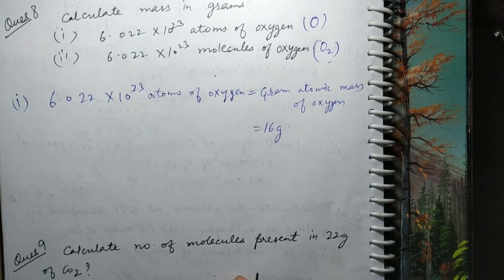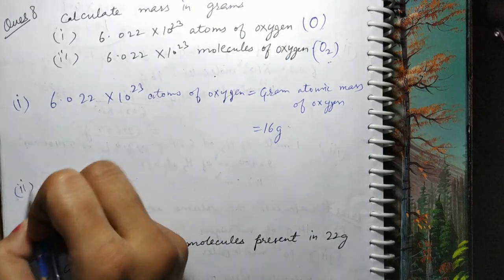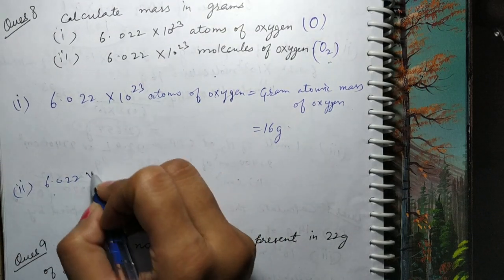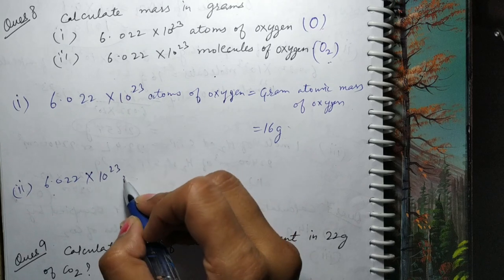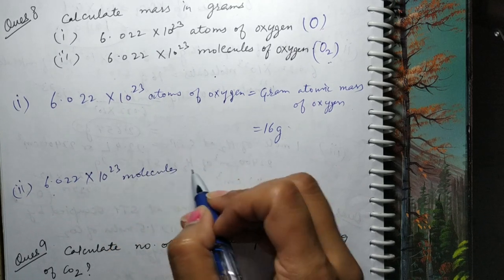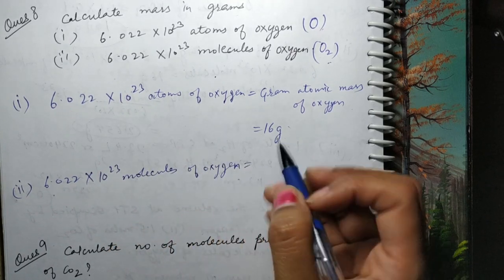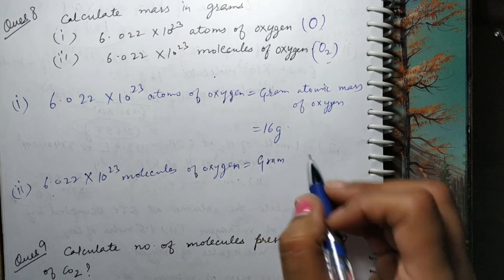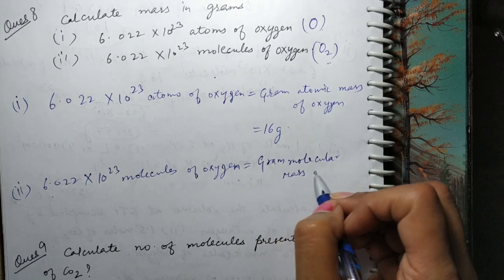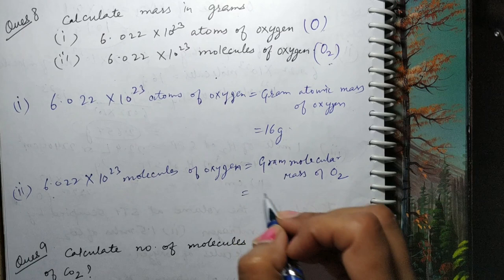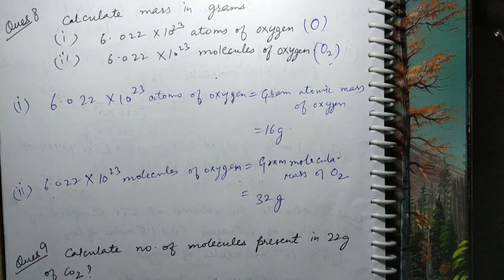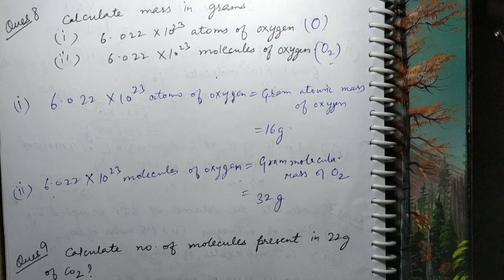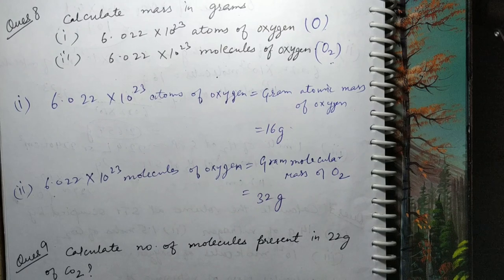Aur molecular state mein: 6.022×10²³ molecules of oxygen = gram molecular mass of O₂ = 32 gram. Isme kuch calculate nahi karna tha — bas yeh dhyan dena tha ki atoms ke case mein kya hoga aur molecule ke case mein kya hoga.